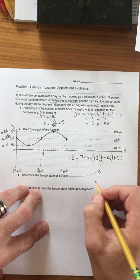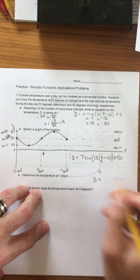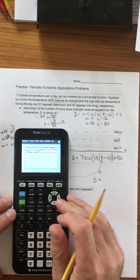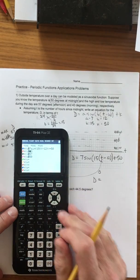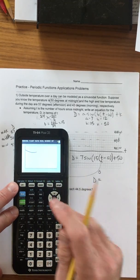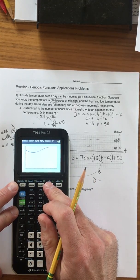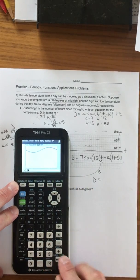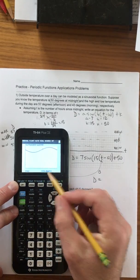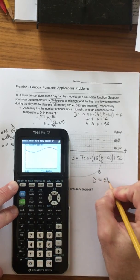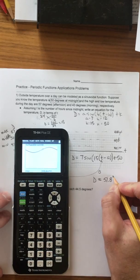So we can do that and multiply it out. Or we could do this. I'm going to go back in here and clear these things out. And then I'm going to use the trace function and I'm going to put 13 in and we get a temperature of about 51.8 degrees.